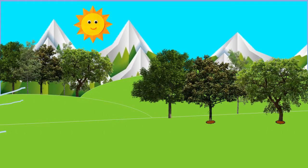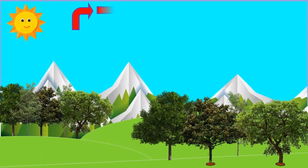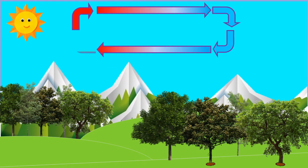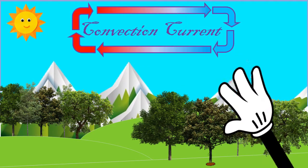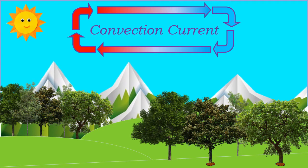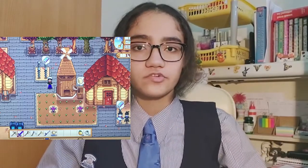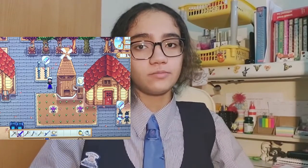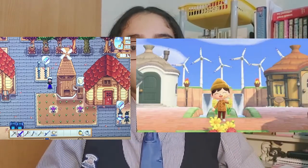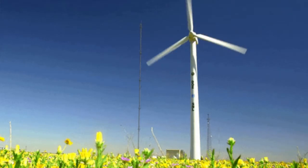Wind is produced as a result of giant convection currents in the Earth's atmosphere, which are driven by the heat energy from the sun. This is where the sun heats up some parts of the atmosphere more than others, which results in the air heating up, expanding, and starting to move around. There are many technologies for extracting energy from the wind. The traditional method uses windmills for grinding and pumping, while the modern method uses wind turbines that can generate electricity.